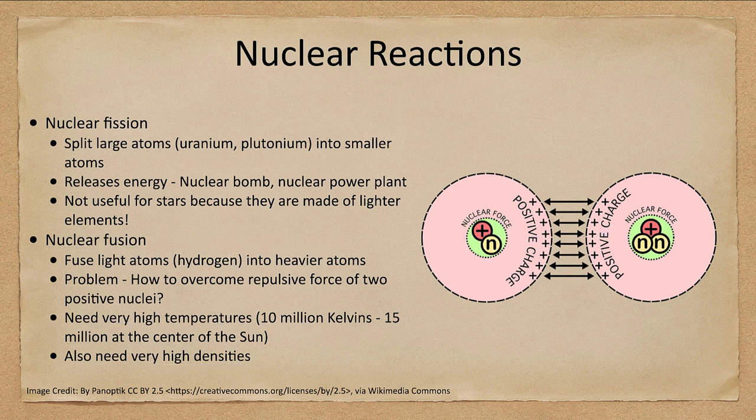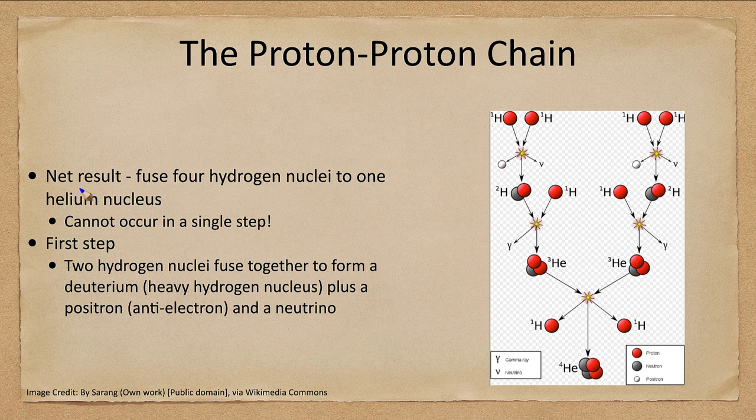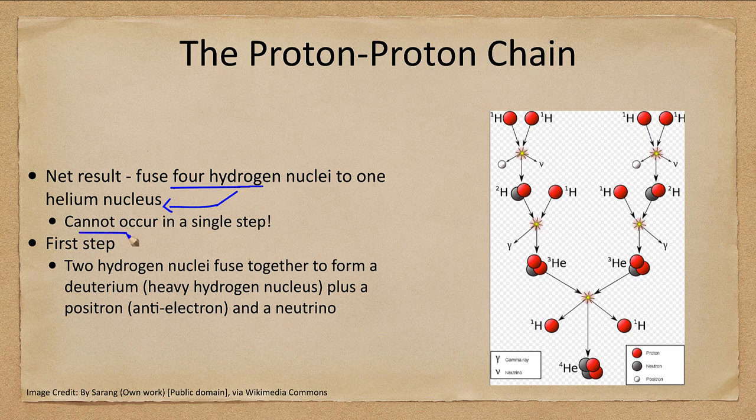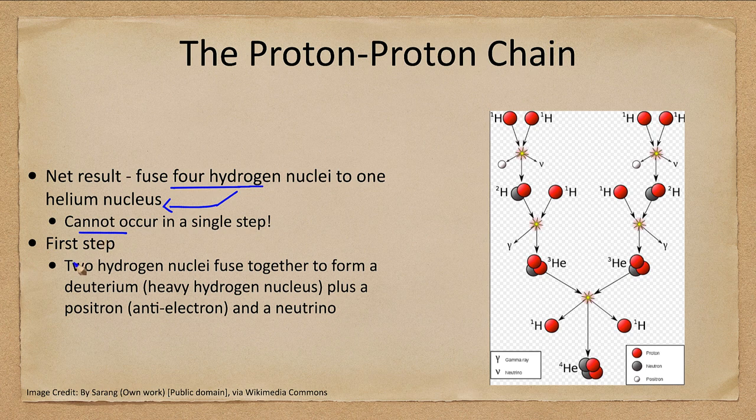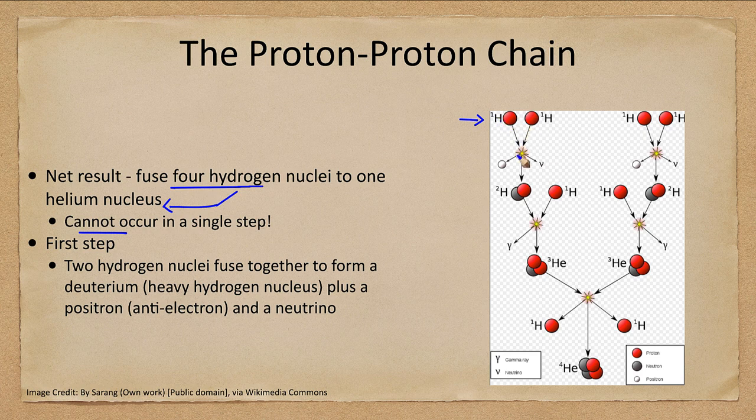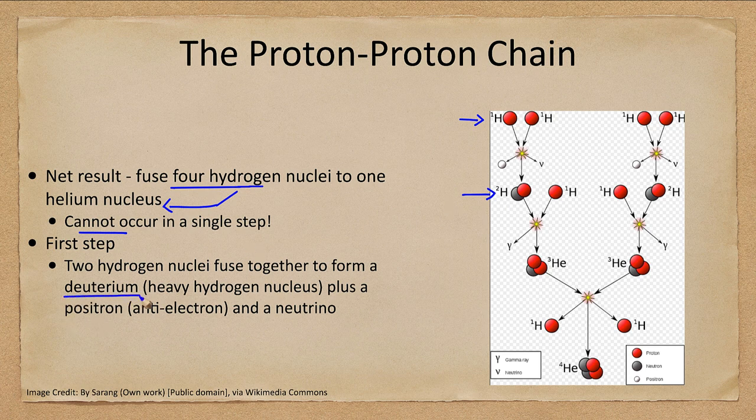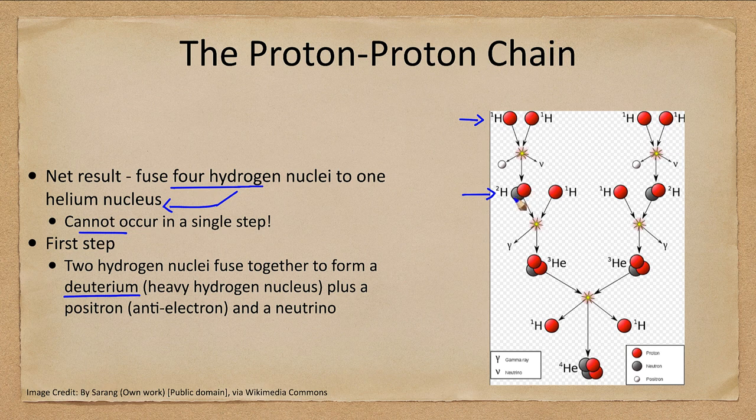It doesn't happen in a single step. Let's look at what we call the proton proton chain. This is how hydrogen is fused into helium. The net result is four hydrogen atoms into one helium nucleus. But you can't do this in one step. It happens in steps. The first step is you have two hydrogen nuclei. They're moving very fast, they fuse together, they give off energy and other particles. They form an isotope of hydrogen called deuterium. Deuterium is heavy hydrogen. It has one proton and one neutron. So it is still hydrogen because it has just one proton, but it's heavier because it also has a neutron present.